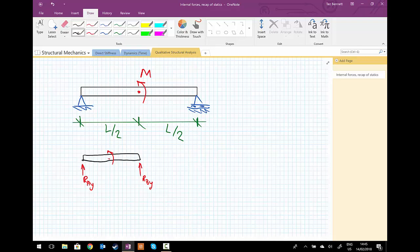So, sum of the forces in the y direction. And you're going to get from sum of the forces in the y direction, you get RAY plus RBY equals 0.